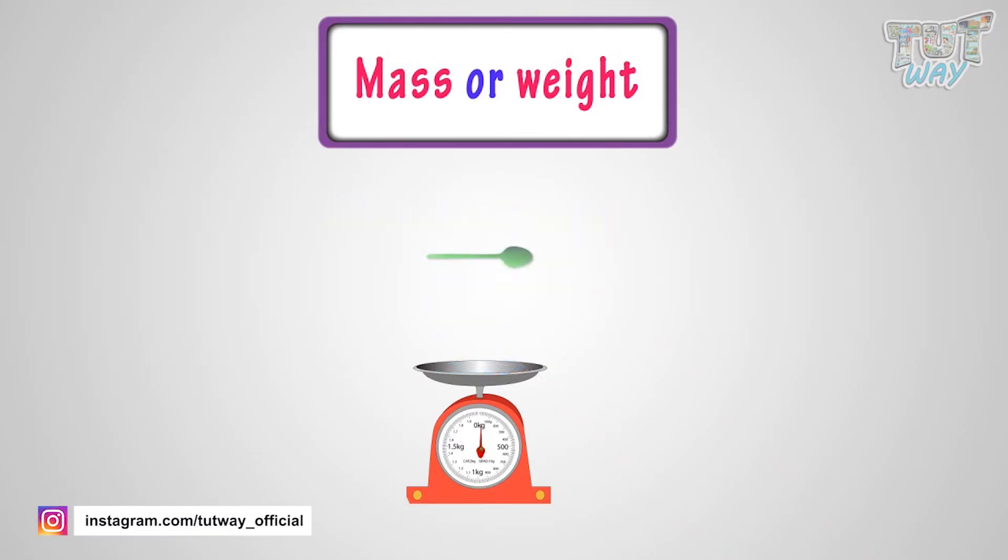Here is a disposable spoon. Its weight is about 5 grams. We write it like this.